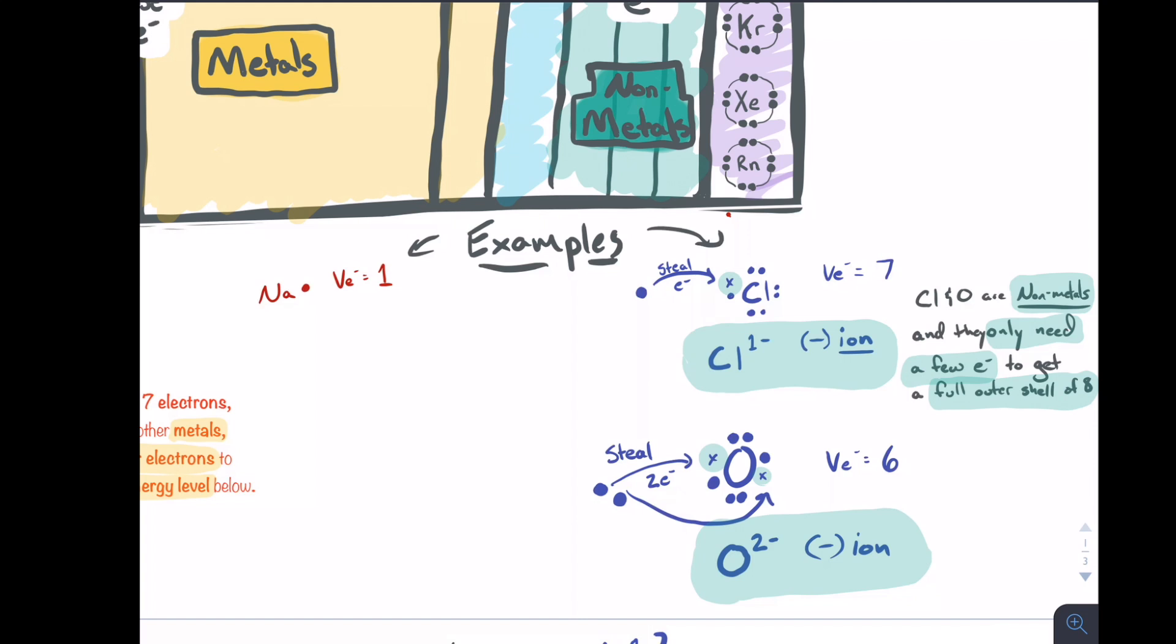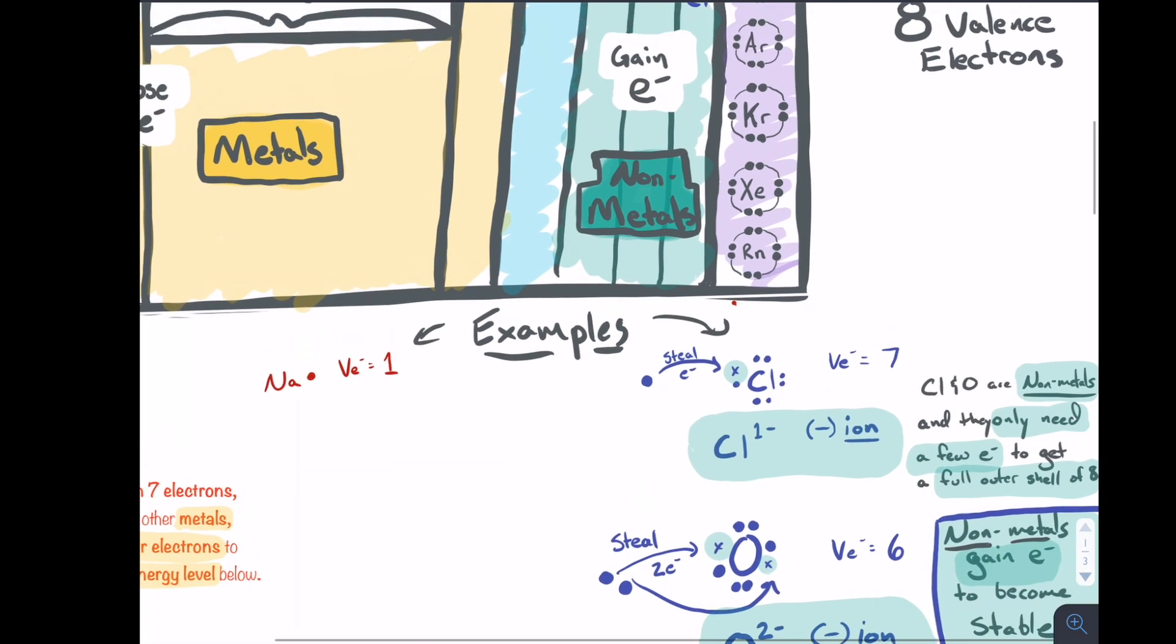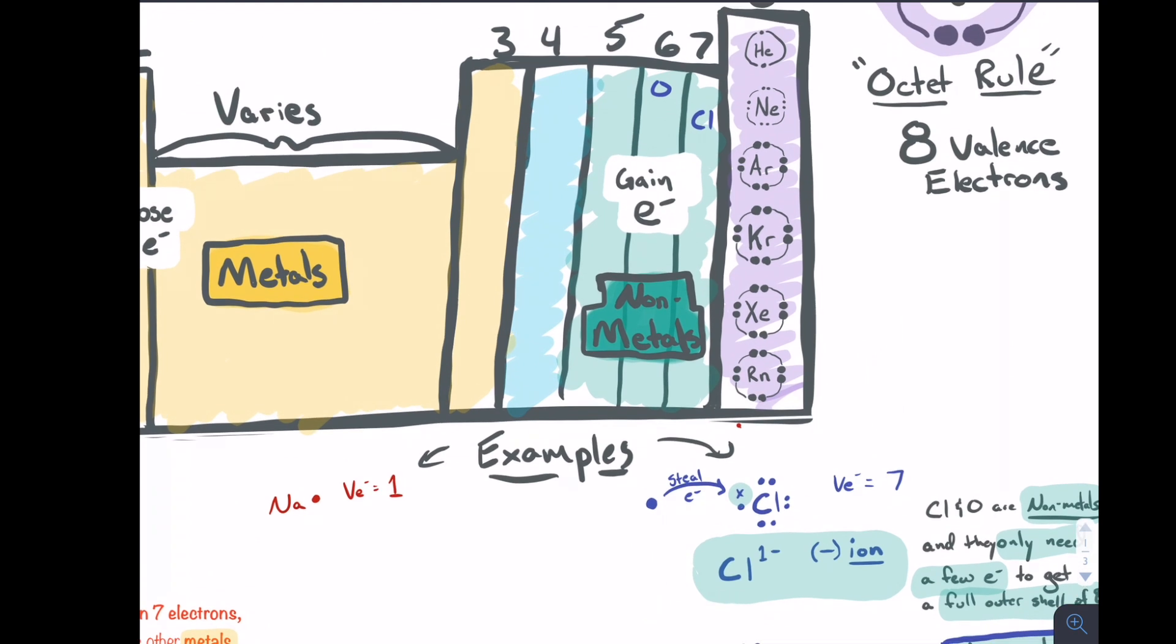Chlorine and oxygen are non-metals and they only need to get a few extra electrons to fill their outer shell to be eight. Non-metals tend to gain electrons to become stable. Let's put over there for the non-metals: non-metals tend to gain electrons.